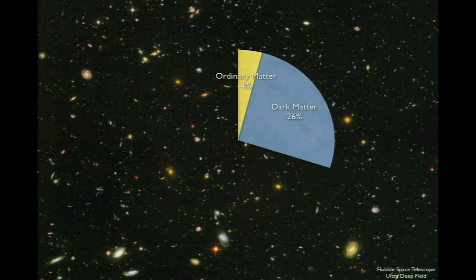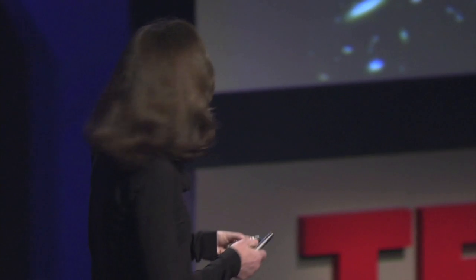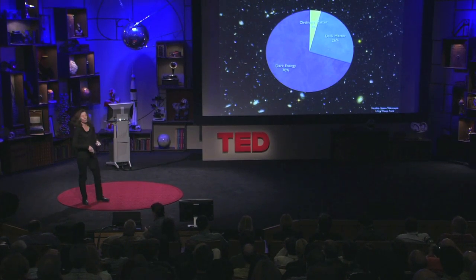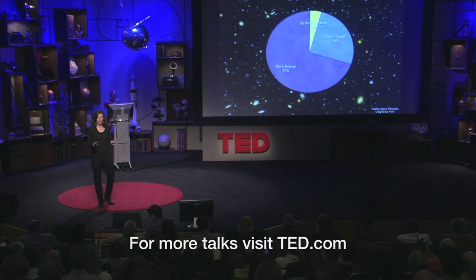Almost a quarter of the matter in the universe is stuff that's invisible. By invisible, I mean it doesn't absorb in the electromagnetic spectrum, it doesn't emit, it doesn't reflect, it doesn't interact with the electromagnetic spectrum, which is what we use to detect things. So how do we know it's there? We know it's there by its gravitational effects. In fact, this dark matter dominates the gravitational effects in the universe on a large scale.